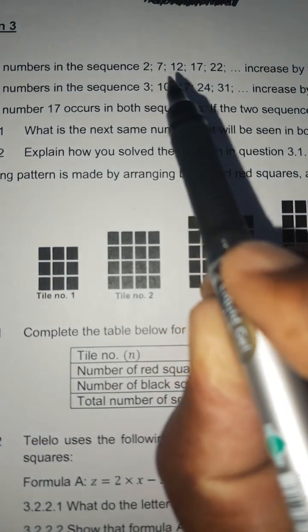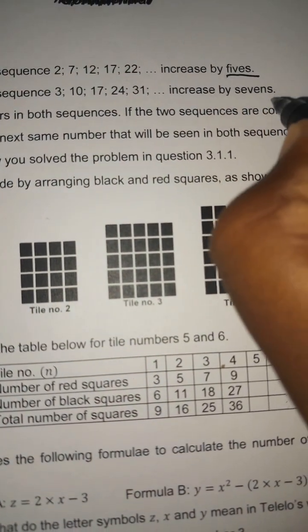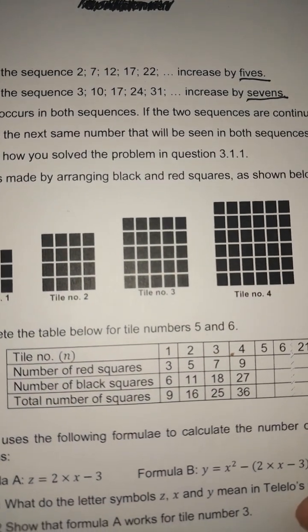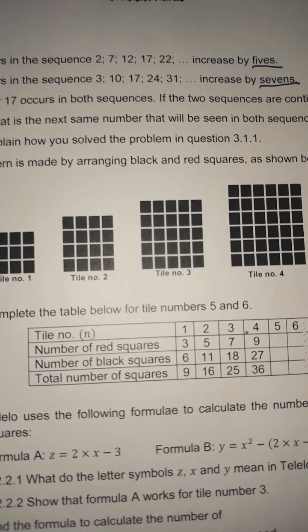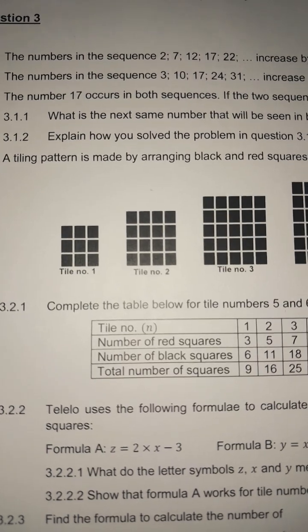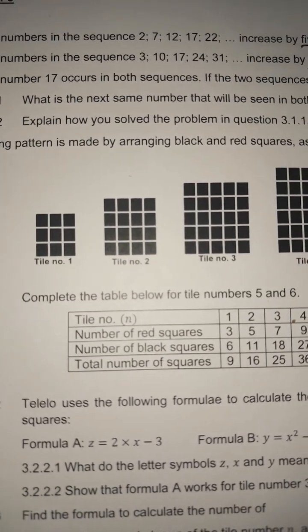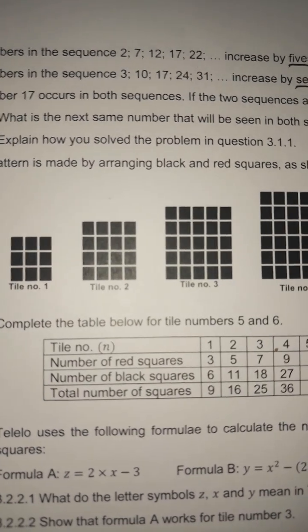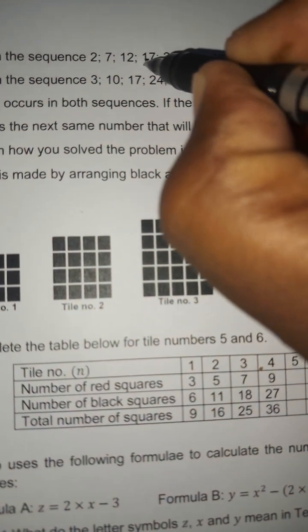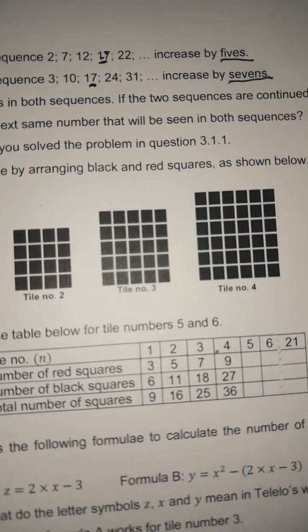The numbers in the first sequence — 2, 7, 12, 17, 22 — increase by fives, and the second sequence increases by sevens. We keep adding 5 in the first and 7 in the second. We're told the number 17 occurs in both sequences, and asked: what is the next number that appears in both sequences? We can see 17 is the first intersection.